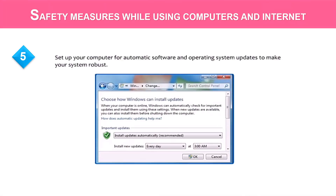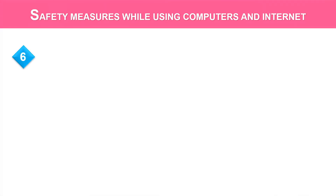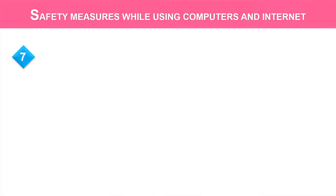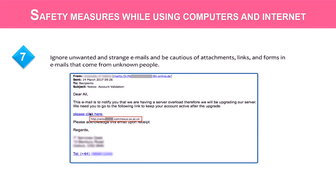Five, set up your computer for automatic software and operating system updates to make your system robust. Six, taking regular backups is the primary and most reliable method of data protection. Seven, ignore unwanted and strange emails and be cautious of attachments, links and forms in emails that come from unknown people.